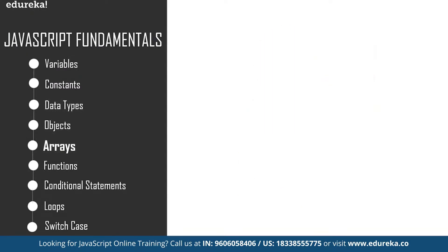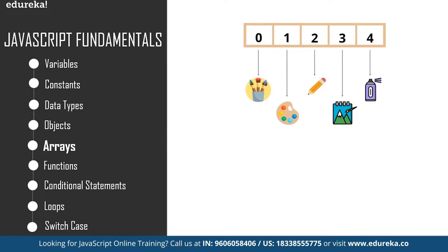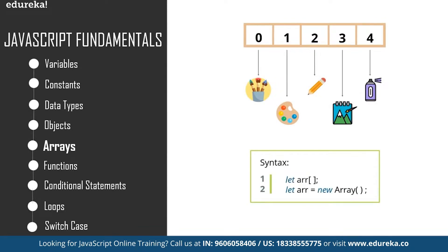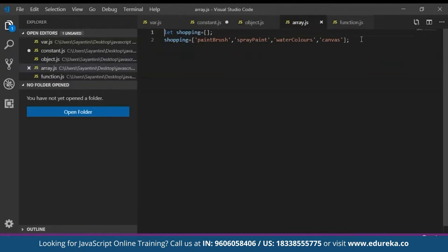An array is a data structure that contains a list of elements which store multiple values in a single variable. For example, if you went shopping to buy art supplies, the list of items you bought can be put into an array. To declare an array in JavaScript, we use the let keyword with square brackets, and all array elements must be enclosed within them. Inside the square brackets you can define the values for your array. When you don't insert any value, it is an undefined array, and you can put any number of values inside it.